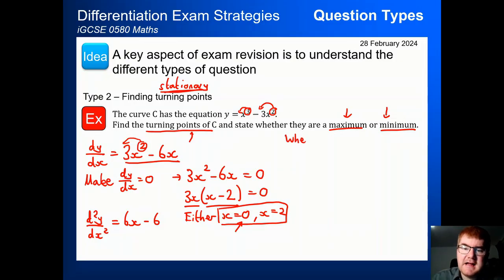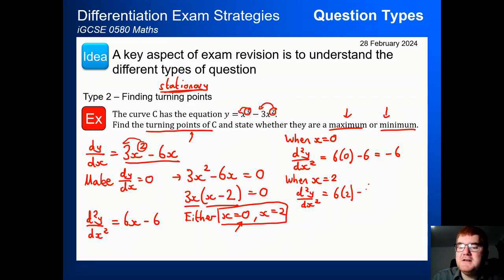So when x is 0, then our d2y over dx squared is equal to 6 lots of 0 minus 6. That's equal to negative 6. If we do this with 2, let's just do both at the same time here. We get d2y over dx squared is 6 lots of 2 minus 6. That gives us positive 6.